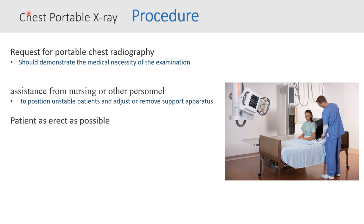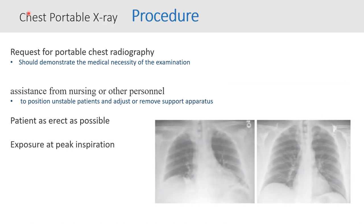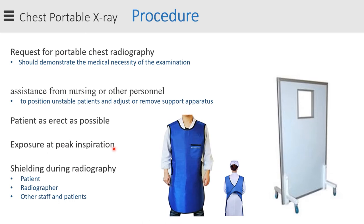Exposure at peak inspiration — this is a rule of thumb. This depends on patient cooperation, but if the patient is not conscious, you can monitor the chest wall and make the exposure as the rib cage is rising. Finally, radiation protection is of great importance during portable examination. You have to protect yourself from radiation as well as the other staff and other patients.